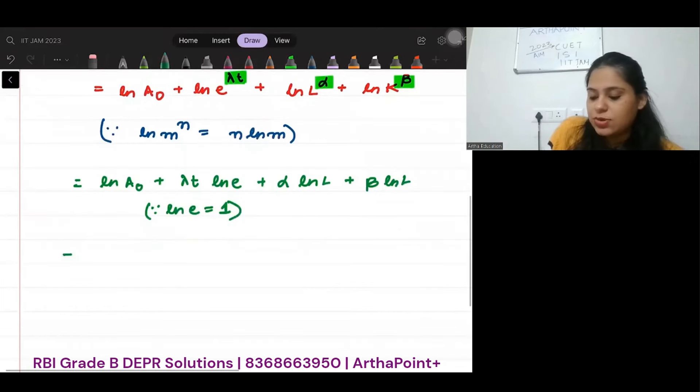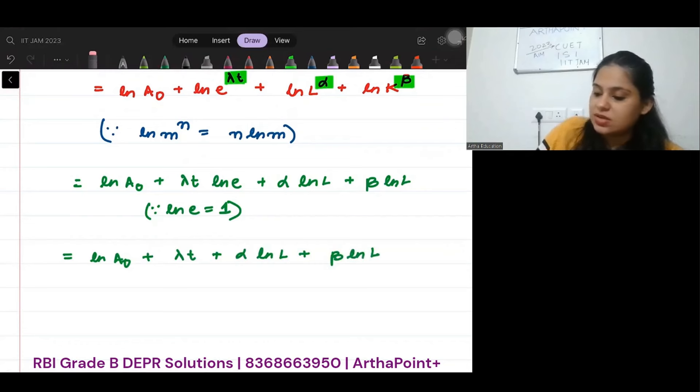So just put that down. What will you have? ln A0 plus λt plus α ln L plus β ln K. This will be ln Y.